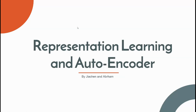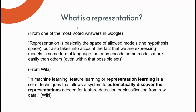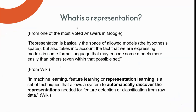Today we're going to talk about representation learning and autoencoders. The first question is: what is representation? If you just Google this question, you might find an answer like: representation is basically in the space of allowed models, but also takes into account the effect that we are expressing models in some formal language that may encode some models more easily than others. If you search Wikipedia and extract the keywords, you get that representation learning is to discover the representations.